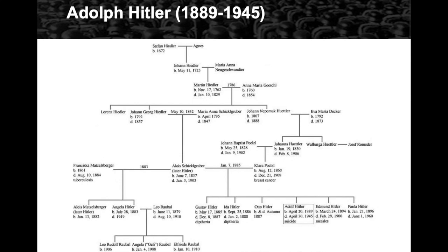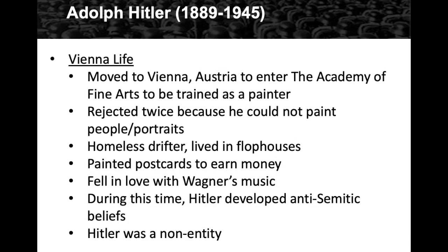Edmund died in 1900 when Adolf was 11 — Edmund was six years old, and the two were very close. Paula lived until 1960. Moving on to Vienna: after his early life Hitler moved to Vienna and wanted to enter the Academy of Fine Arts to be trained as a painter. He applied twice and was rejected both times because, while he was a very good landscape painter, he could not paint people or portraits.